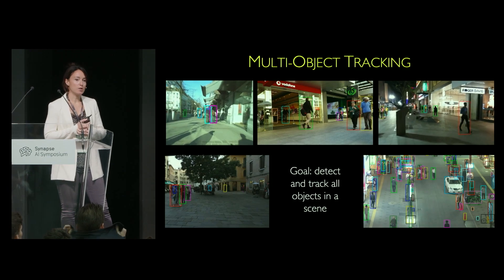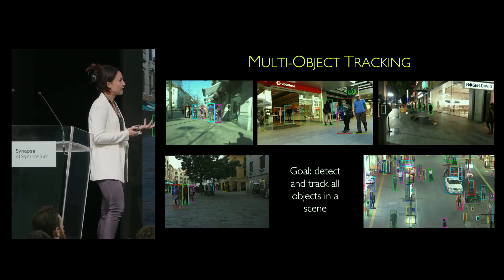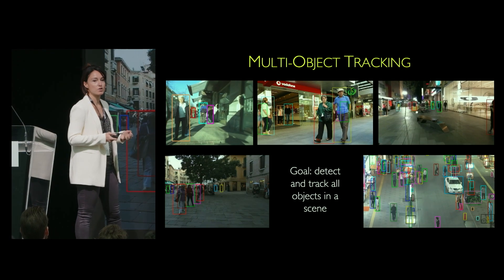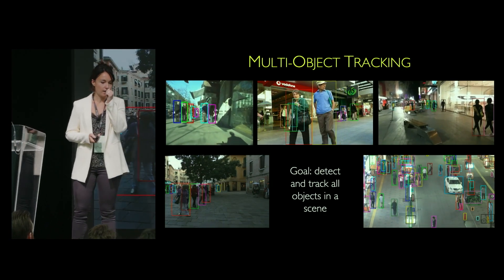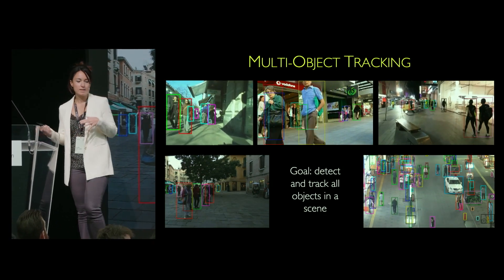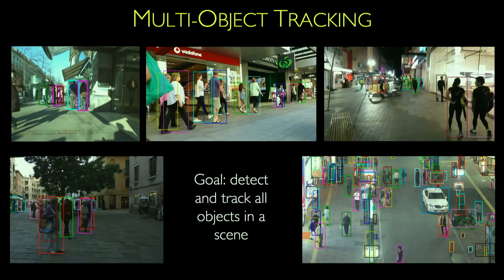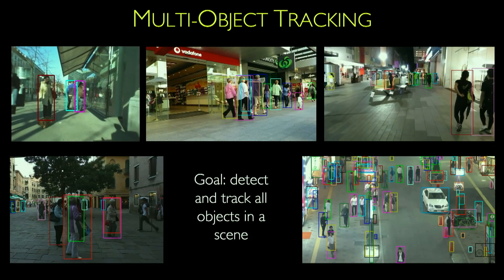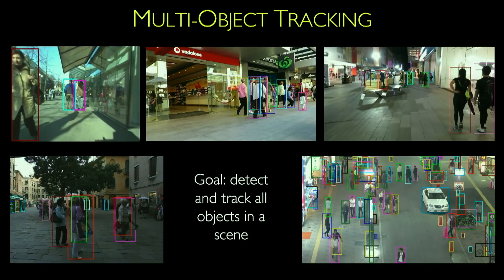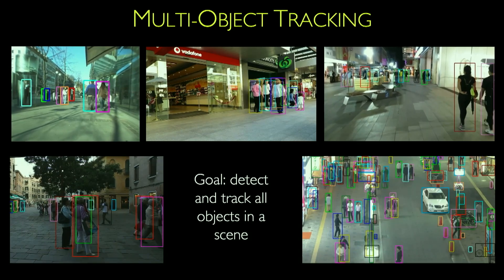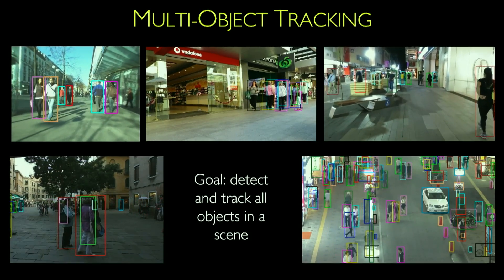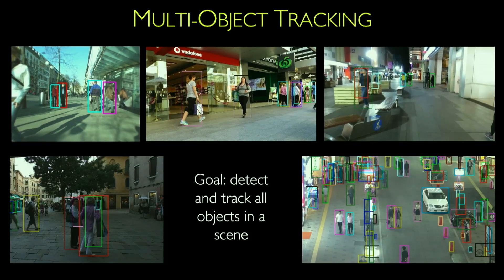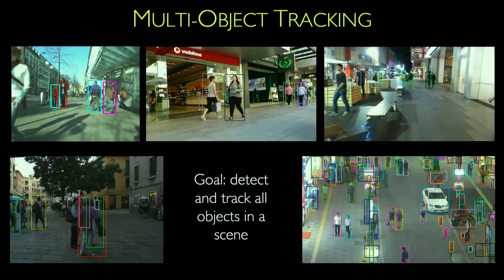The task is multi-object tracking. We have these types of scenes in which our goal is to detect and track all the objects in a scene. We can see all types of scenes where there are pedestrians walking around, maybe even autonomous driving scenes where you can see a lot of cars and pedestrians. We want to be able to understand this dynamic world around us.